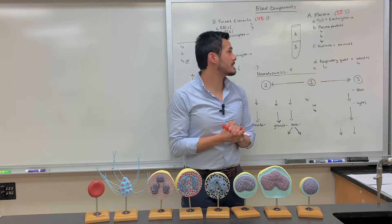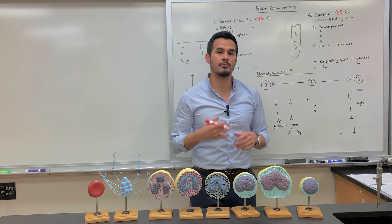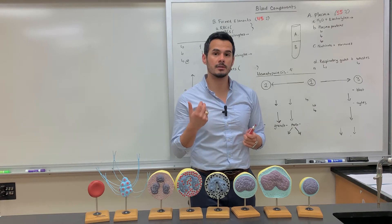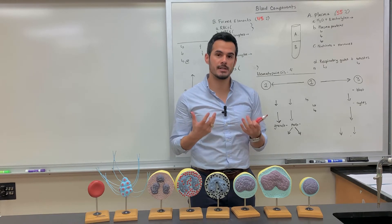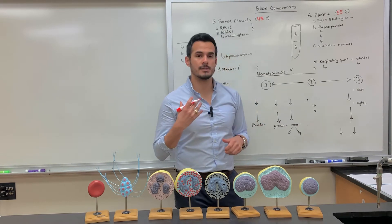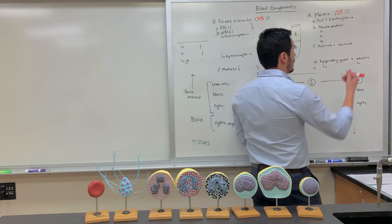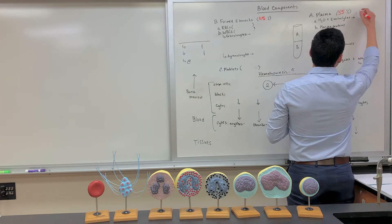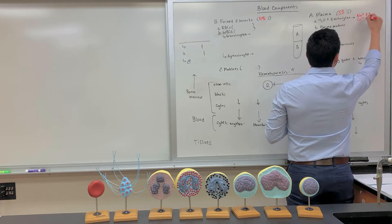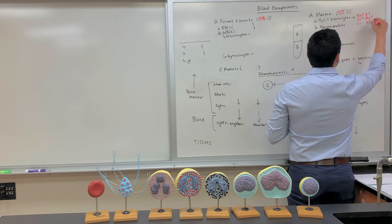Some of the different components within the plasma include water and electrolytes. Water functions as a great solvent — it helps to dissolve things. For instance, when you add sodium chloride into water, it dissociates into sodium ions and chloride ions. Water is also great at absorbing heat. Some of the electrolytes found within our blood include sodium, potassium, calcium, magnesium, chloride ion, and bicarbonate.